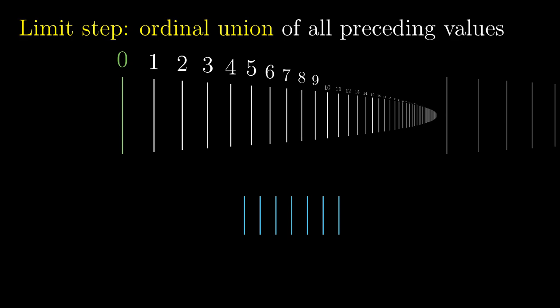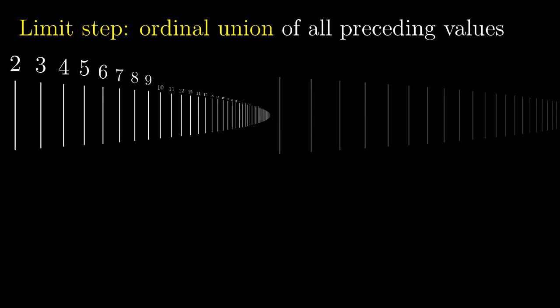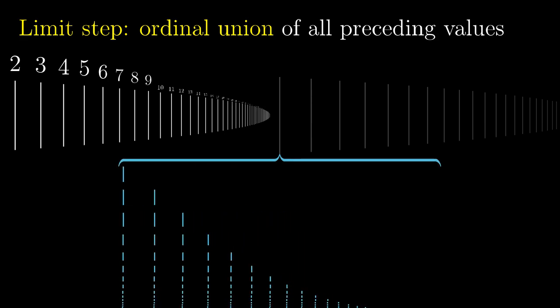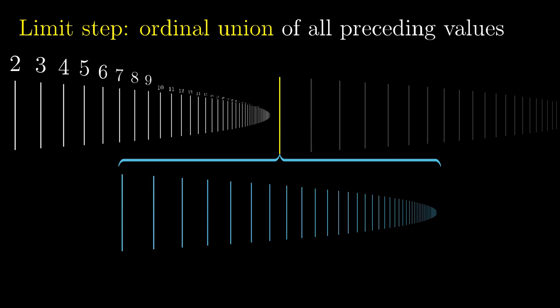But the definition align to the left and merge works even for an infinite number of ordinals. So, in our case, we take all the natural numbers, align them to the left and merge them. The set of all the natural numbers was chosen to represent this ordinal number, so we call it omega.